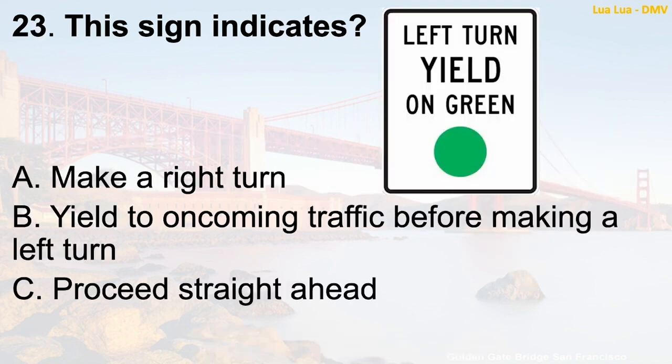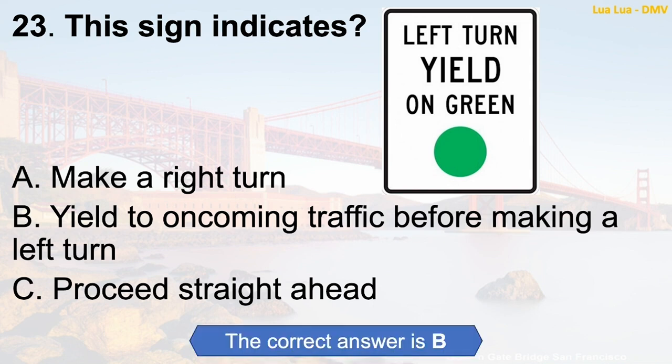Question 23: This sign indicates — A. Make a right turn. B. Yield to oncoming traffic before making a left turn. C. Proceed straight ahead. The correct answer is B: Yield to oncoming traffic before making a left turn.